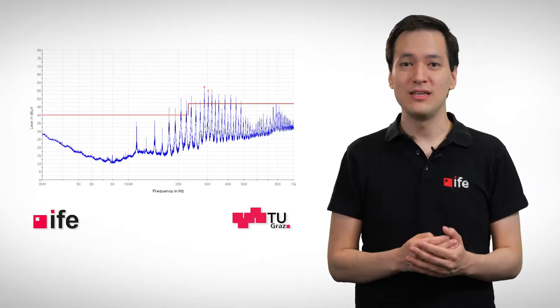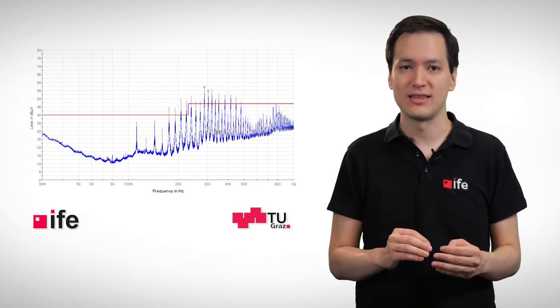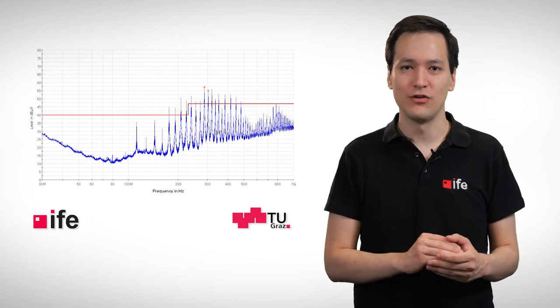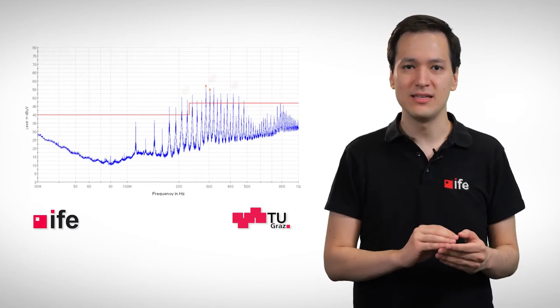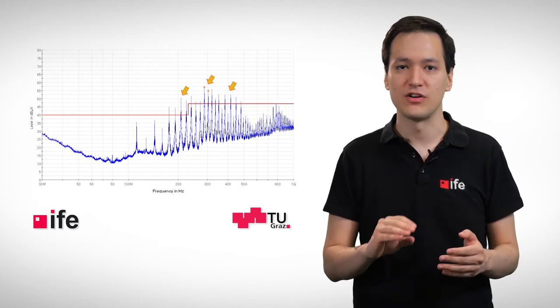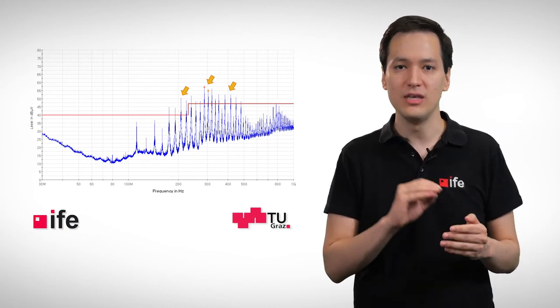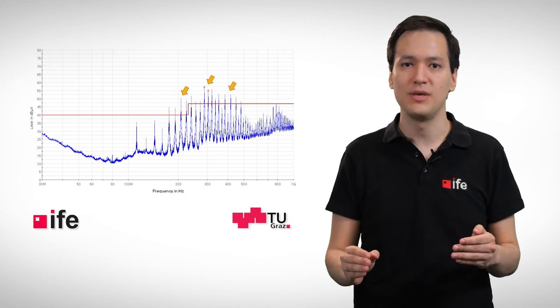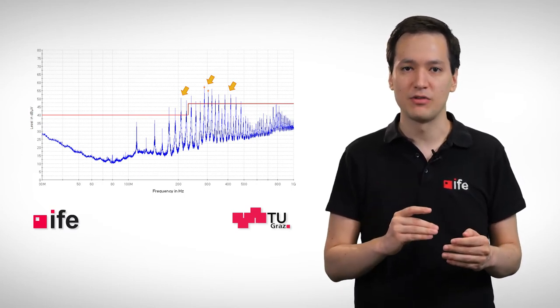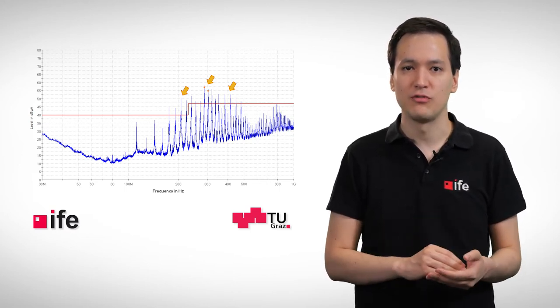Therefore, if you need results as soon as possible and to save time during a testing phase, it could be a smart strategy to do measurements first with the peak detector. Peaks which exceed the limit line can be scanned afterwards with the quasi-peak detector, because the results of the quasi-peak detector are equal or smaller to the results of the peak detector. However, remember to set the measurement time of the peak detector high enough, at least 3 times the execution time of your DUT.